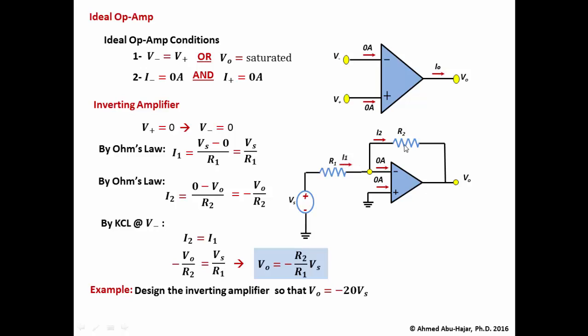You can sometimes go as low as 500 ohms or as high as 200kΩ, depending on the type of op-amp. For this example, using a general-purpose op-amp such as the LM741, we select R1 equal to 1 kilo-ohm, which leads to R2 equal to 20 kilo-ohms.